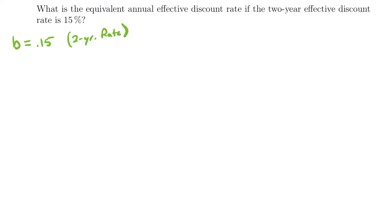What we're looking for is to convert this rate to an equivalent annual effective discount rate, which we typically denote with the letter D. That is our annual effective discount rate, which in this case we do not know — I wrote a question mark to represent that. In order to find this equivalent annual effective discount rate, we need our conversion formula to move from an annual discount rate to a non-annual discount rate.